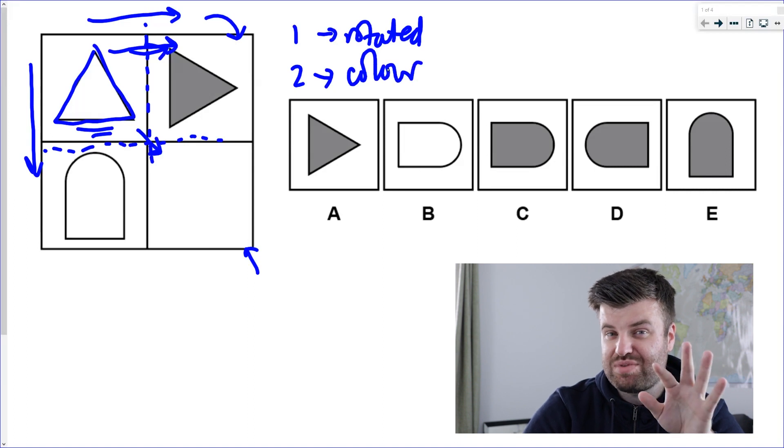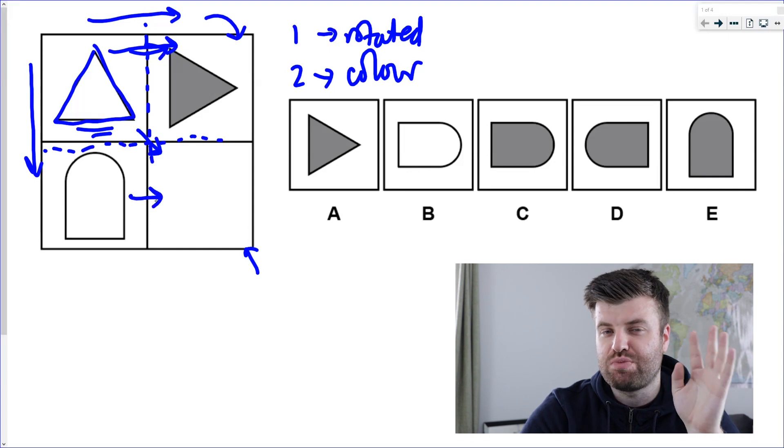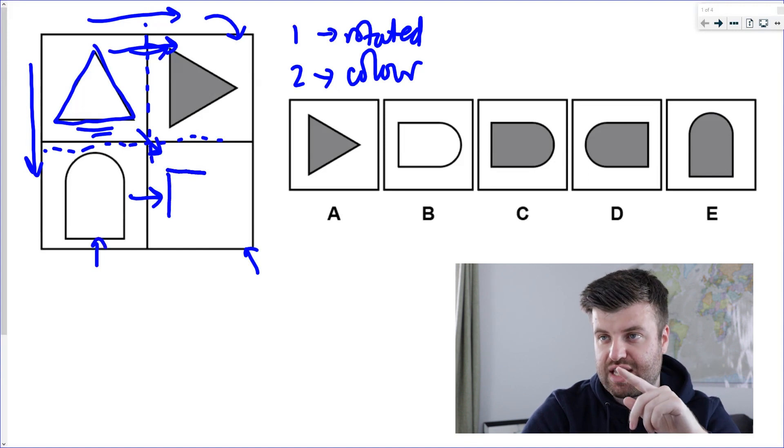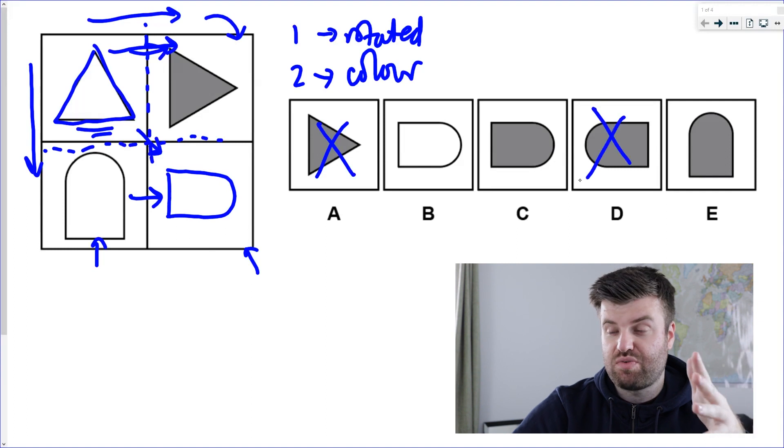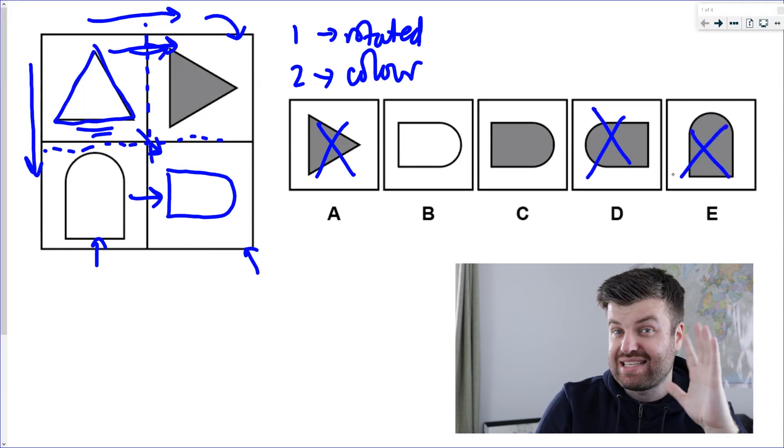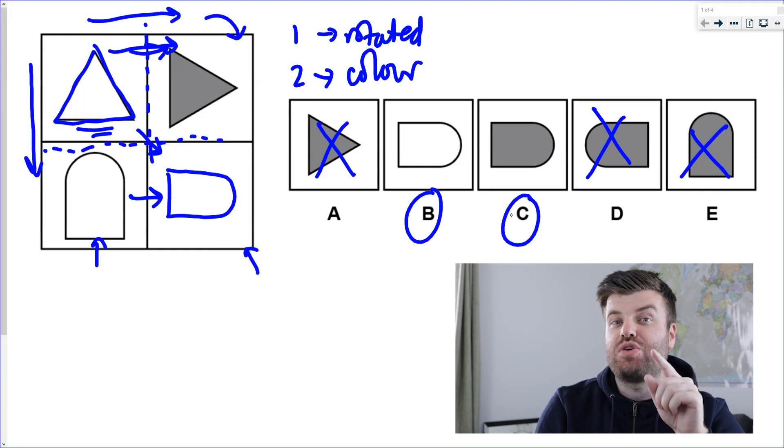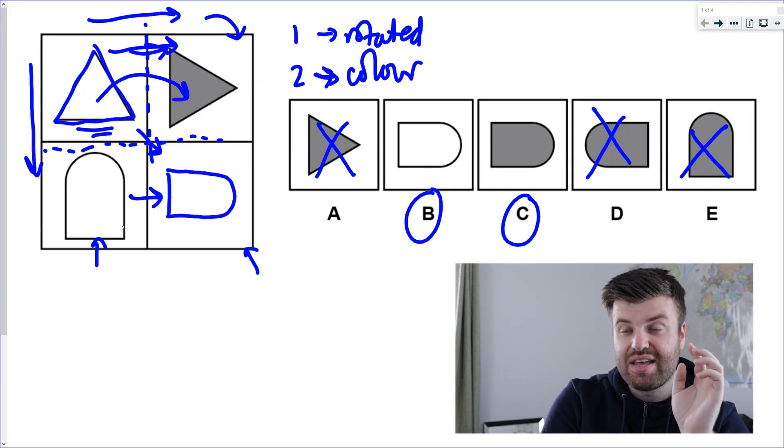So if I was thinking what's happened to the shape, well number one, it's been rotated, and number two, the color has changed. Has the shape changed? No. Let's take a look at the bottom then. Let's try and apply that same transformation moving across into our blank tile. So we start off with this shape. Step one was that it's been rotated, so I'm going to rotate the shape 90 degrees clockwise. It should look like that. Now we can use deduction—it can't be A, it can't be D, that's rotated the wrong way, and it can't be E, that hasn't rotated at all. So we're left already with B or C.